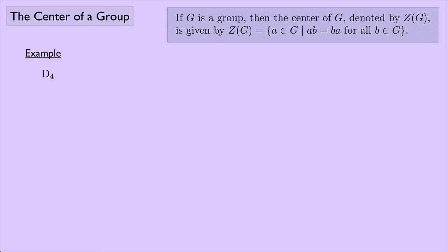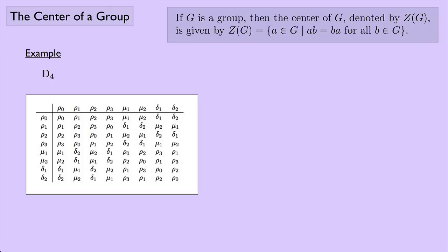Let's look at D4 — that was the group of symmetries on a square. Here's the group table for D4, and we're going to try and find the center of D4, which is Z of D4. We know for sure we have the identity element, which was row zero for this group. But do we have anything else?